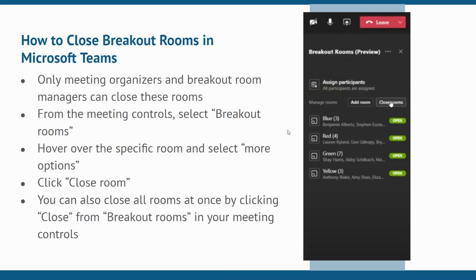Closing your room ends that breakout session and returns participants to the main meeting. If you've turned off the option to automatically move people into breakout rooms, participants will receive a message asking if they want to return to the primary meeting or leave. Only the meeting organizer and breakout room manager can close breakout rooms. To close an individual breakout room, go to the meeting controls and select breakout rooms. Hover over a specific room, select more options, and then click close room.